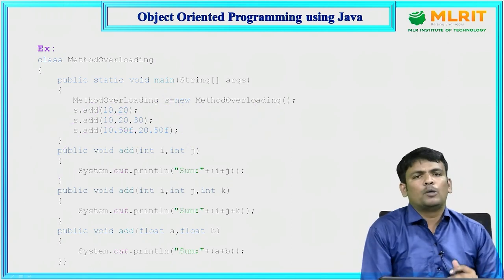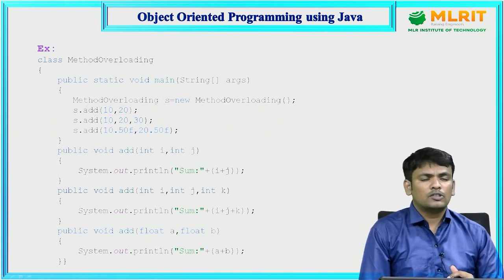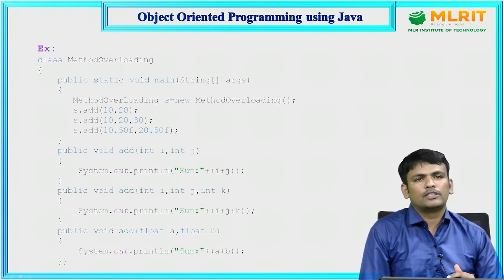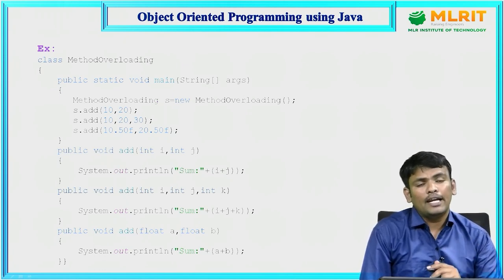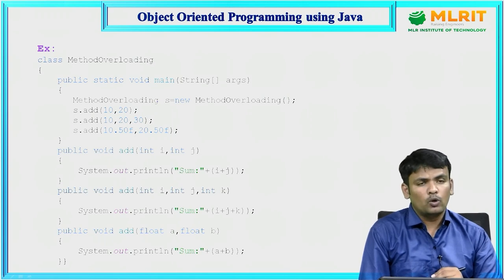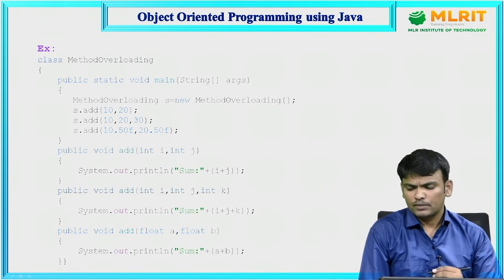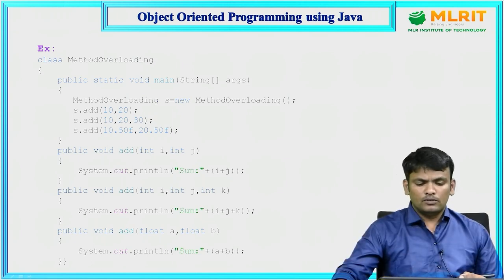To summarize OOP principles: abstraction talks about data hiding; inheritance talks about code reusability; polymorphism talks about multiple forms; encapsulation talks about data protection and binding. All four principles must be supported for a language to be called object-oriented.